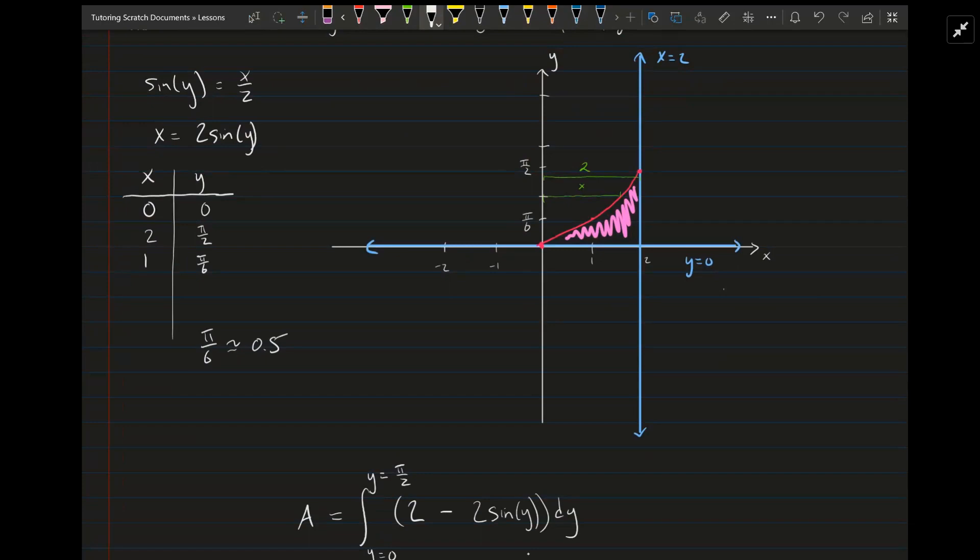When y is pi halves, sine of pi halves is 1, so x is 2 times 1, which is 2. And then for y equals pi over 6, I just picked that because I knew that would be a nice answer. Sine of pi over 6 is 1 half, so 2 times 1 half is 1, so x is 1.